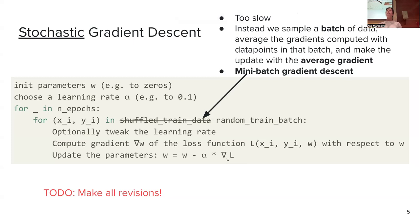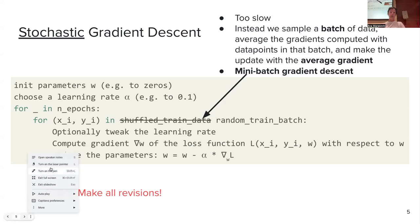Nothing has majorly changed in this algorithm. I recommend you do not write down these slides as there are mistakes on them — I will revise them after the lecture. The mistake is that instead of averaging the gradient and making the update outside the for loop, I'm currently making it inside the for loop. I will make that revision later.